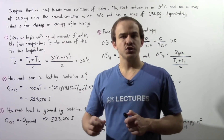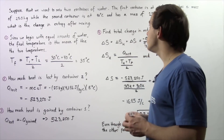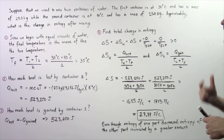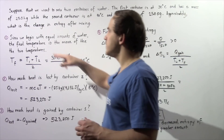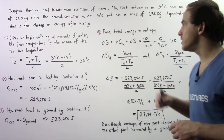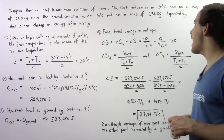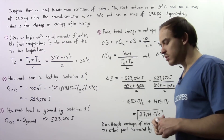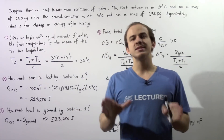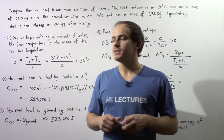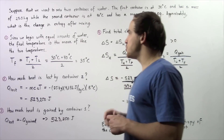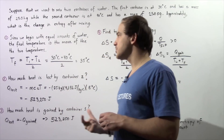Suppose that we want to mix two different containers of water. The first container is at 30 degrees Celsius and has a mass of 25 kilograms, while the second container is at 40 degrees Celsius and also has a mass of 25 kilograms. So our two containers have the same exact quantity of water but are at different temperatures. So approximately, what is the change in entropy after our mixture?